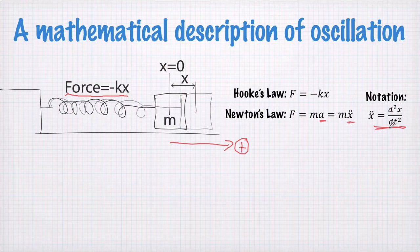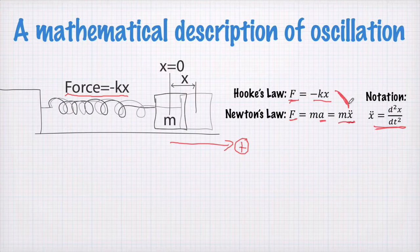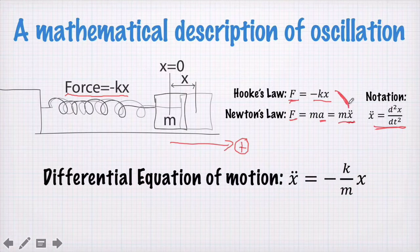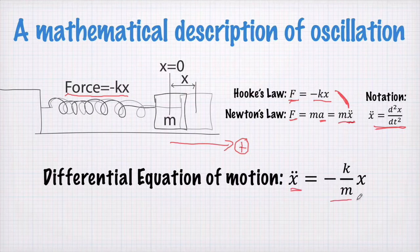So hidden in these two equations, Hooke's law and Newton's law, is a differential equation of motion. We see this because these two forces must be equal, which means that negative kx must be equal to mass times x double dot. If we just put these two things equal to each other, then we find that x double dot must be equal to negative k/m times x. And this is a differential equation of motion that we wish to solve.